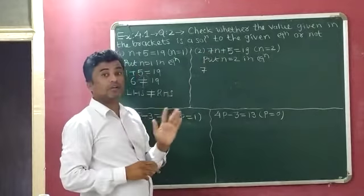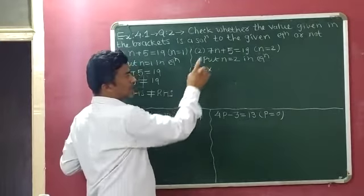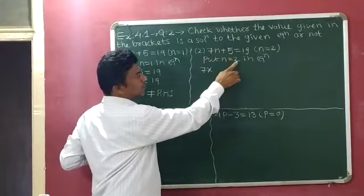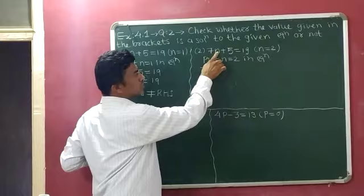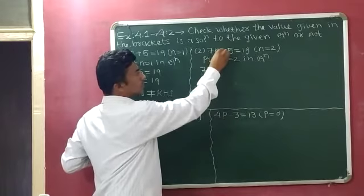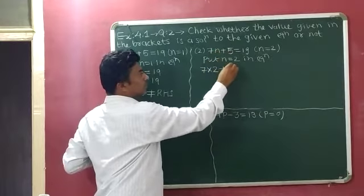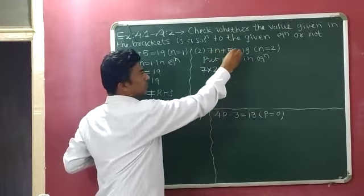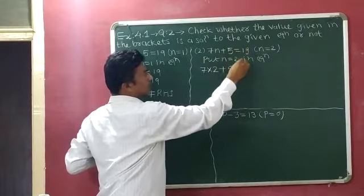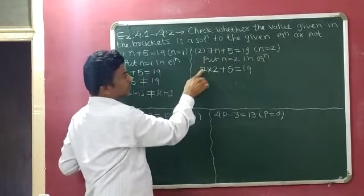Between 7 and n, no sign is given, so we write a multiplication sign. Since n equals 2, instead of n we write 2. So we have 7 multiplied by 2 plus 5 equals 19.